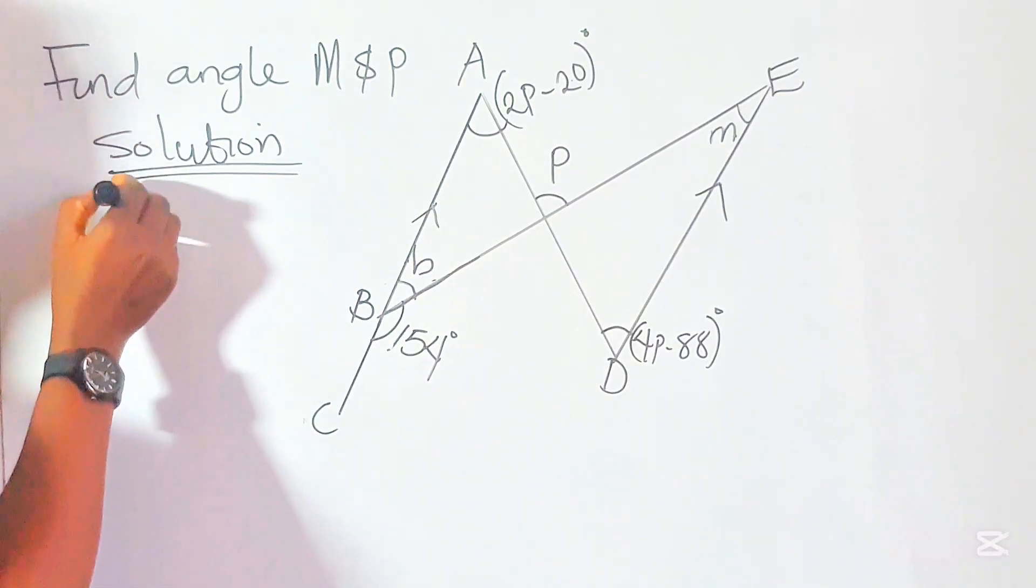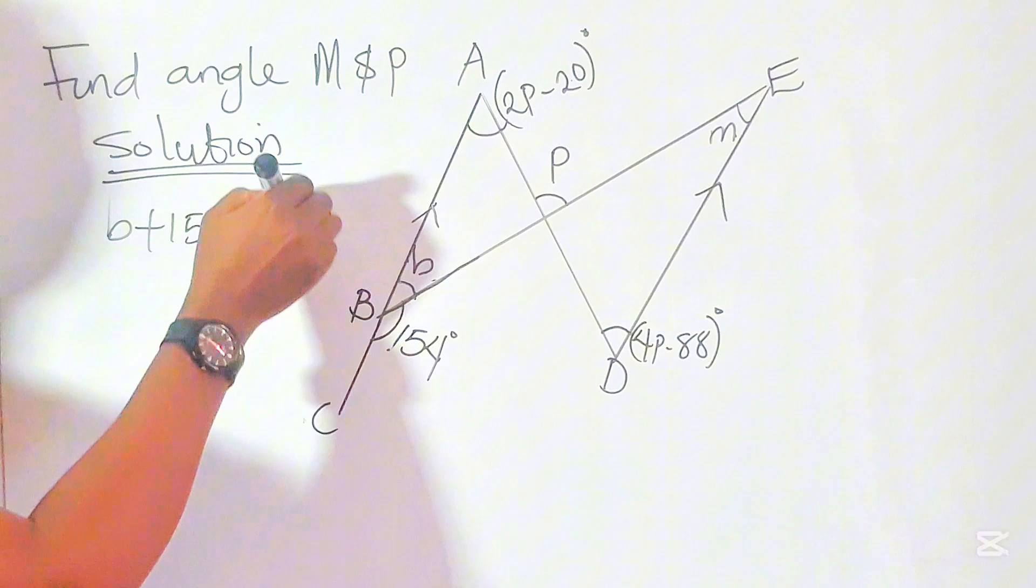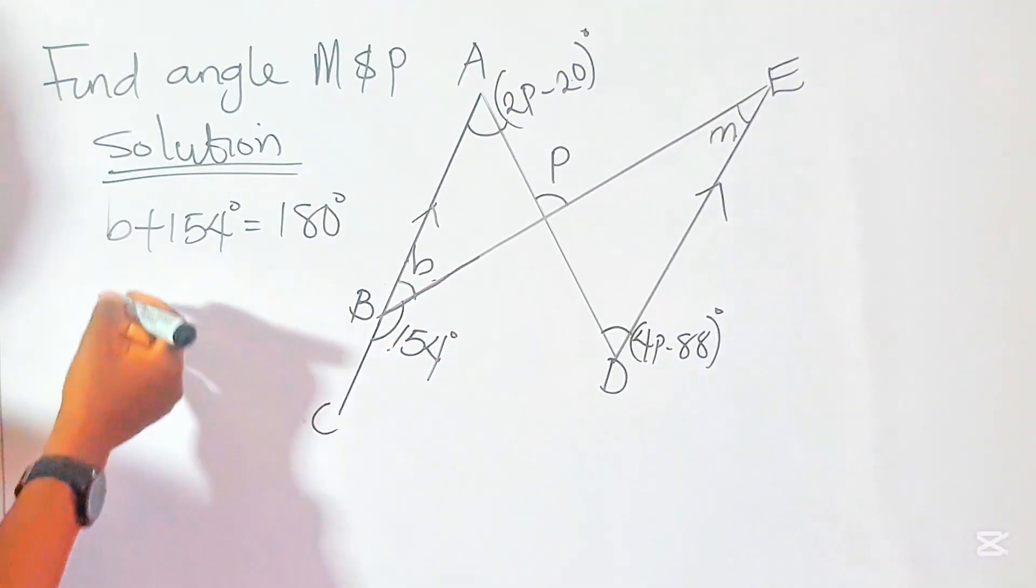If we sum B plus 154 degrees, we equate it to 180 degrees because they are sum of angles on a straight line.